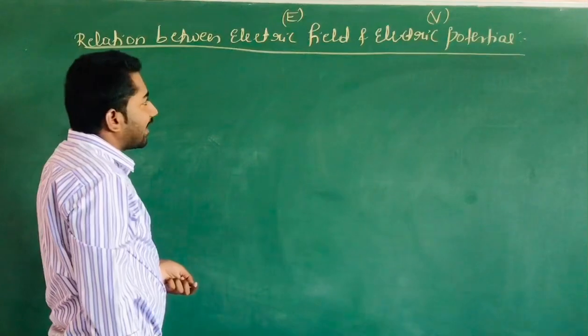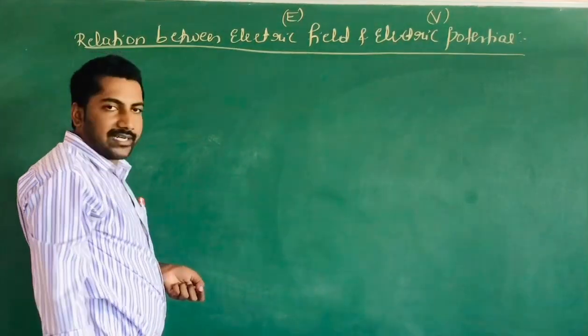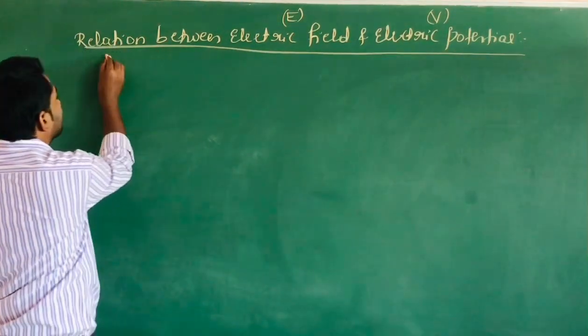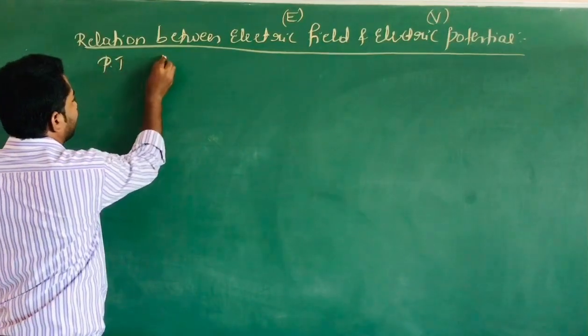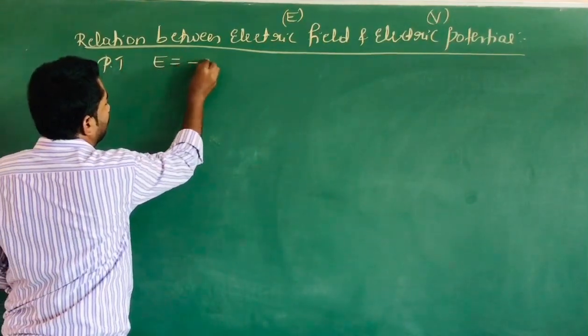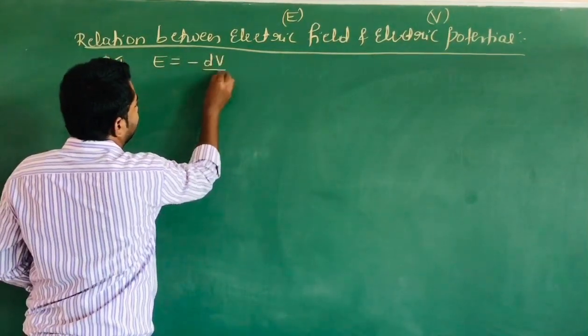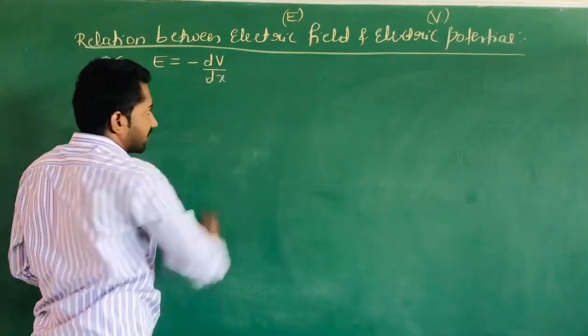The relation between electric potential and electric field is also called as: prove that E is equal to minus dV divided by dx.